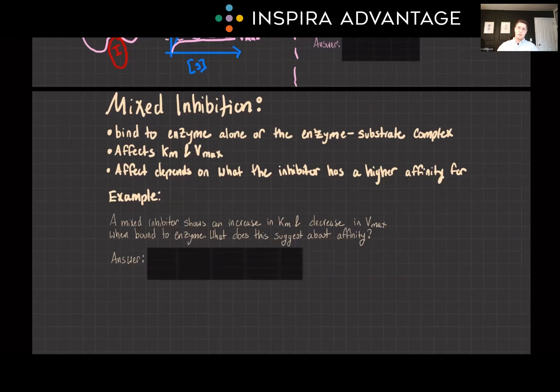And finally, for the MCAT, this is the last one you need to know: a mixed inhibitor. These can bind to either the enzyme alone or the enzyme-substrate complex, affecting both KM and VMAX values. The effect on KM is going to depend on whether the inhibitor has a higher affinity for the free enzyme or the enzyme-substrate complex.